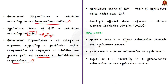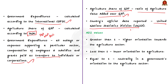The agriculture share of GDP is measured as a ratio of agriculture value added over GDP. This value is based on official data reported by countries to the United Nations Statistics Division, that is UNSD.